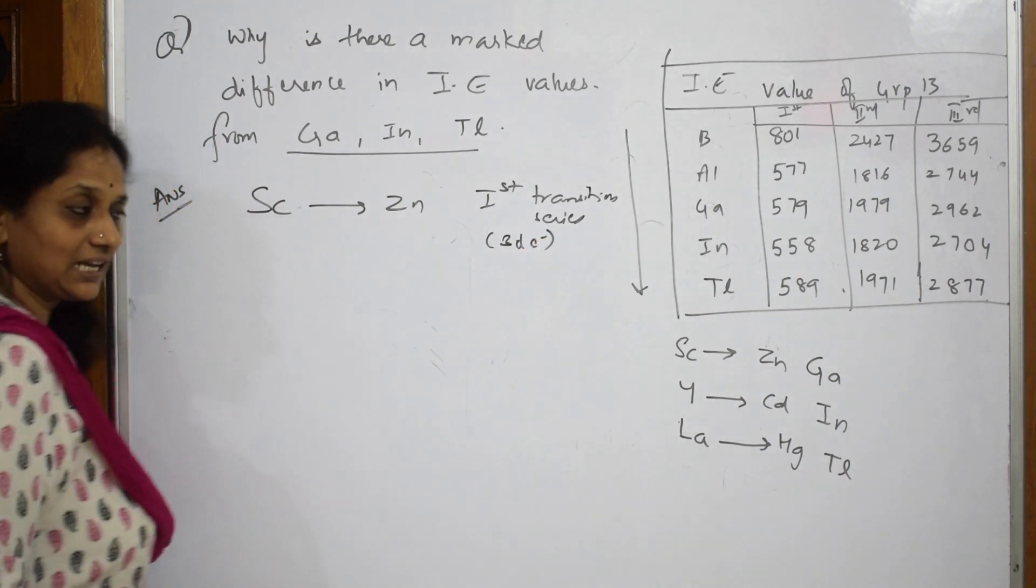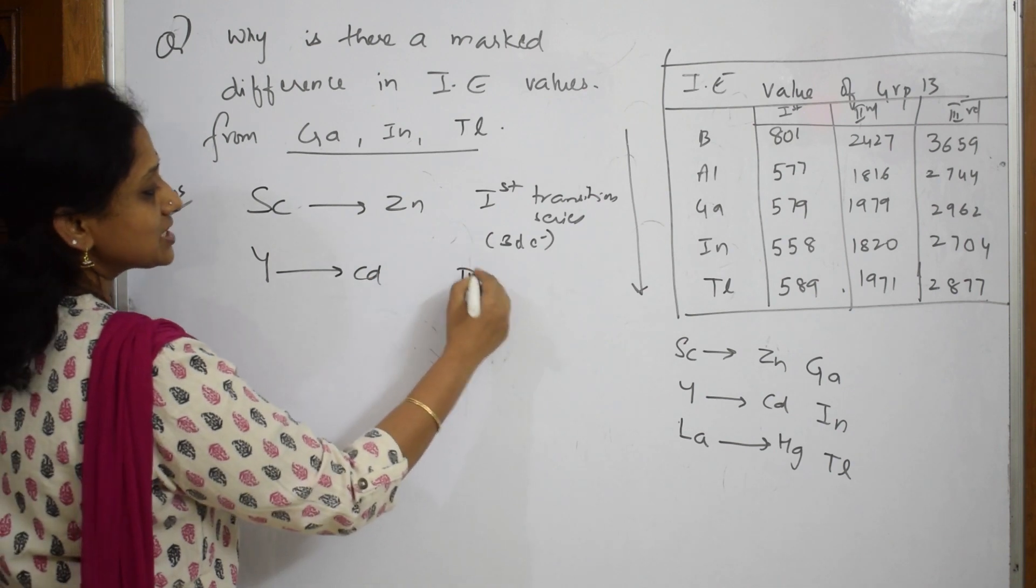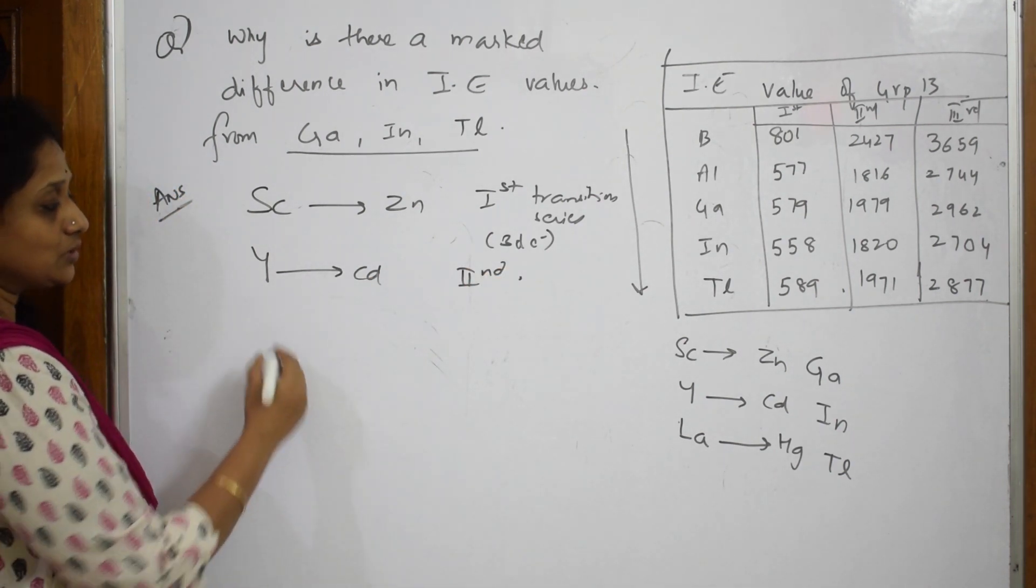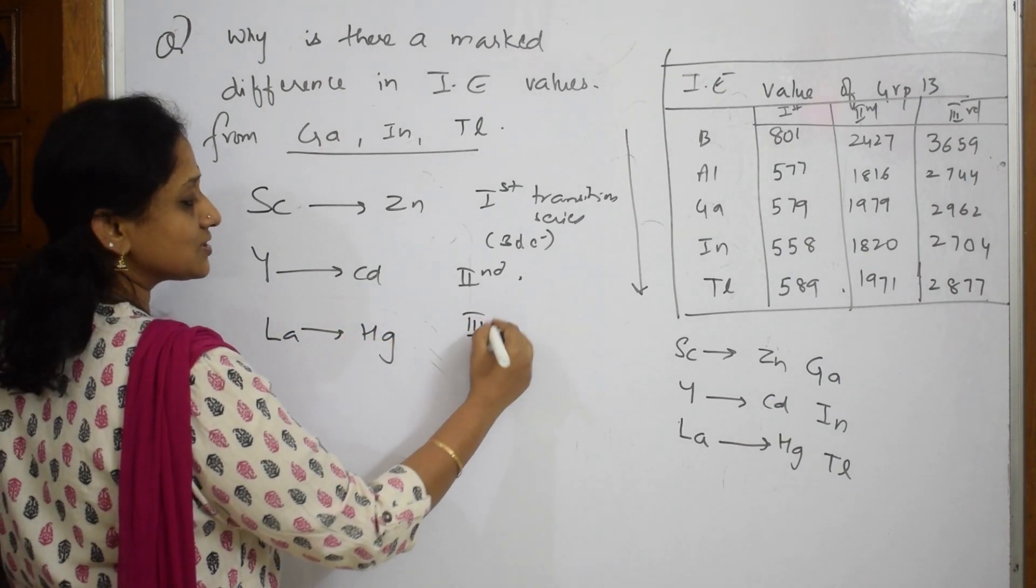After that, in Indium we have Yttrium to Cadmium - this is the second transition series. Next, if I have to speak about Thallium, it is from Lanthanum to Mercury - this is the third transition series.